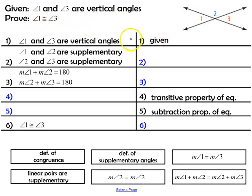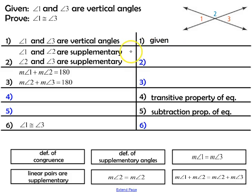You start off with the statement you're given: angle 1 and angle 3 are vertical angles — and we know that's true because it was given to us. Then, using the diagram, we can say that angle 1 and angle 2 are supplementary, and also that angle 2 and angle 3 are supplementary, because linear pairs are supplementary.